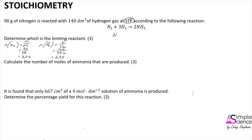To determine which is the limiting reactant, we look at the ratio of nitrogen to hydrogen from our balanced equation, which shows a ratio of 1 to 3. We ask how much hydrogen would be required to use all of the given nitrogen. We divide by 1 and multiply by 3, meaning we would require 9.624 moles of hydrogen to react fully with the given nitrogen. We only have 6.25 moles of hydrogen, so the reaction will stop because we run out of hydrogen. Therefore, hydrogen is the limiting reactant — it is the reactant that runs out first.